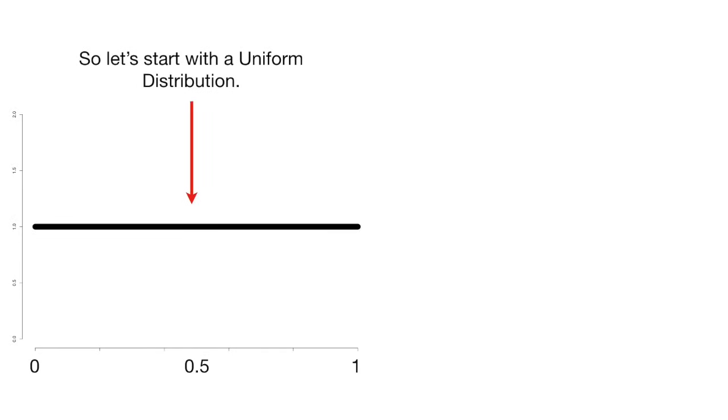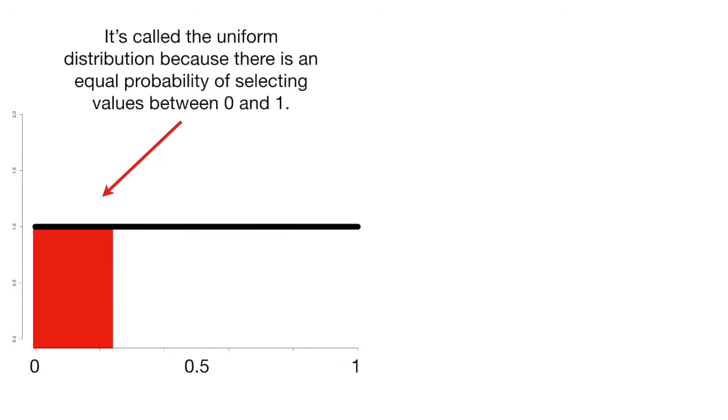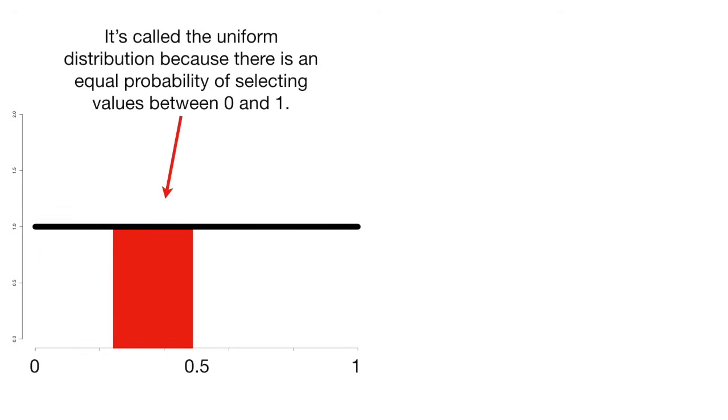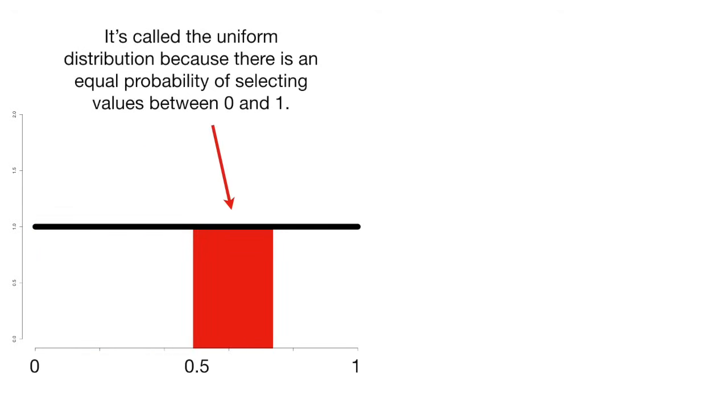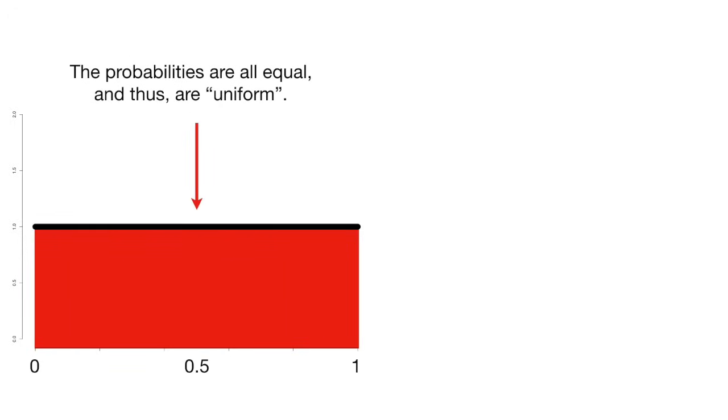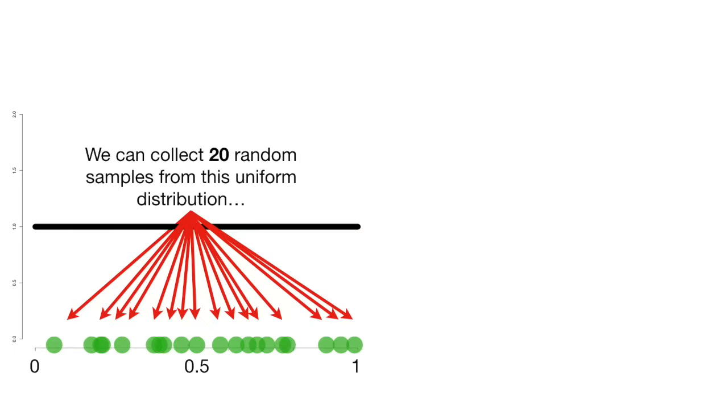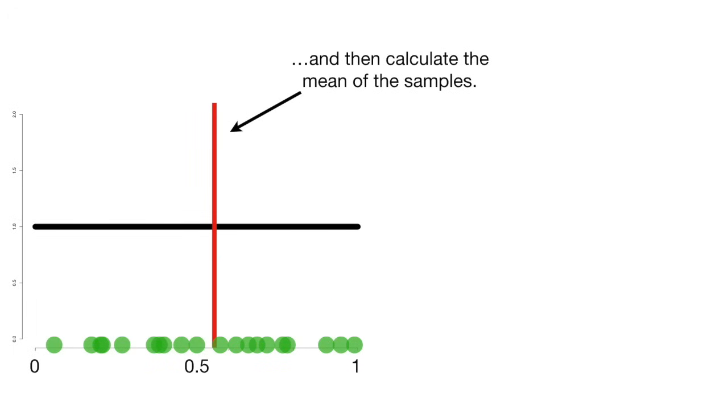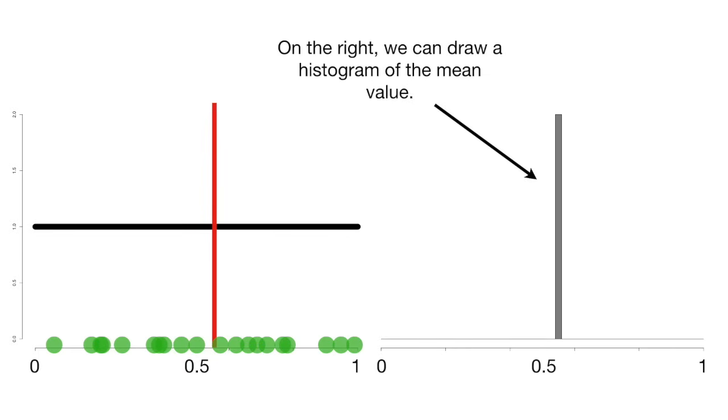So let's start with a uniform distribution. This one goes from 0 to 1. It's called the uniform distribution because there is an equal probability of selecting values between 0 and 1. The probabilities are all equal and thus are uniform. We can collect 20 random samples from this uniform distribution and then calculate the mean of the samples. And on the right, we can draw a histogram of the mean value.